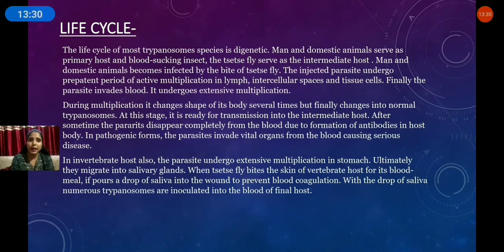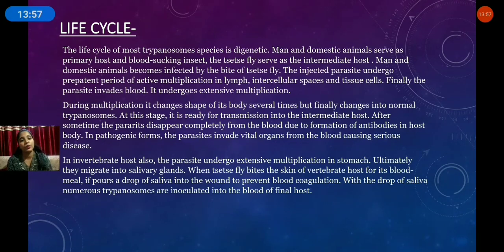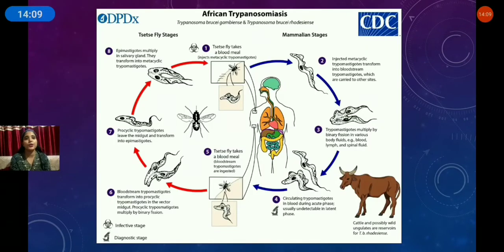When the tsetse fly bites the skin of the vertebrate host for its blood meal, it pours a drop of saliva into the wound to prevent blood coagulation. With the drop of saliva, numerous trypanosomes are inoculated into the blood of the final host. This completes the whole life cycle between the tsetse fly and the human host.